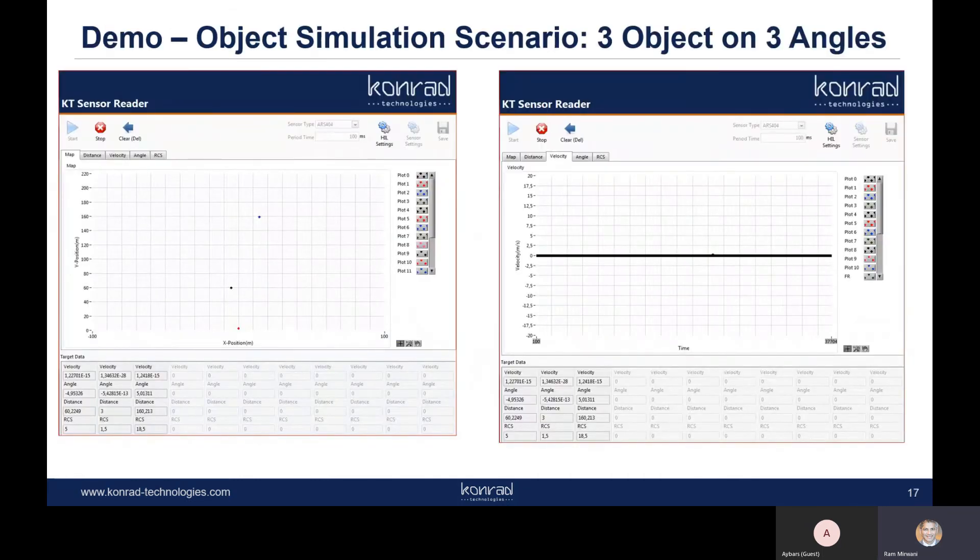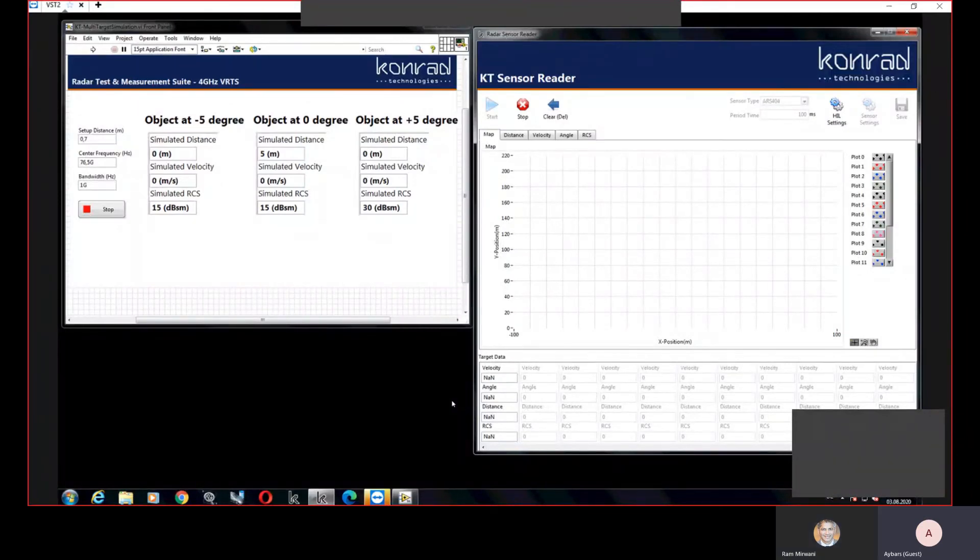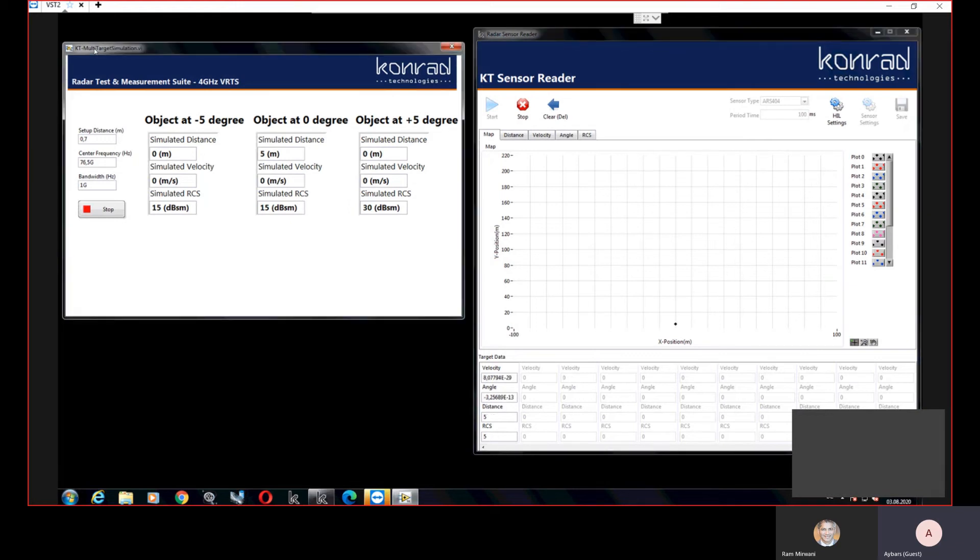Thank you Ram. As you mentioned we have three targets at three different angle of arrival setup. Now I will demonstrate how we can control each target simulation. First we are going to simulate the target at five meters with zero degree and as you can see on the screen at the right hand side our radar sensor started to detect the simulated object.